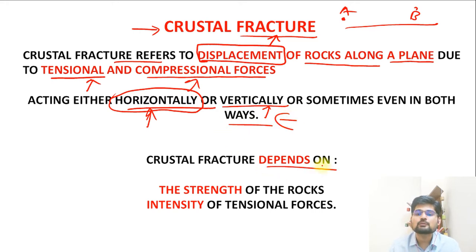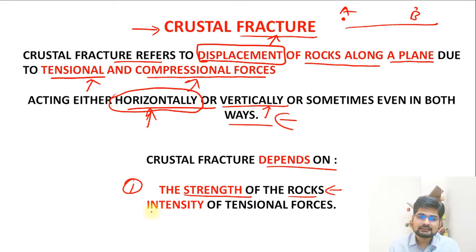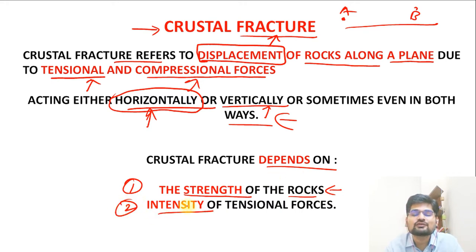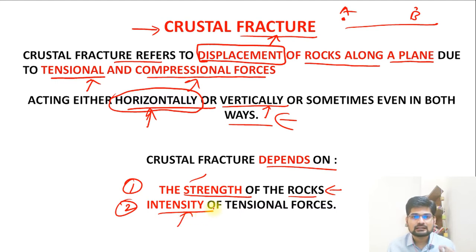Crustal fracture depends upon two factors. Number one is the strength of the rocks — how the rocks are made, how dense and how packed they are. The second factor is the intensity of the tensional forces — how intense the force is. So the strength of the material and the intensity of force are the basic factors behind crustal fracture.